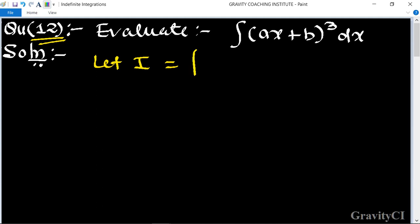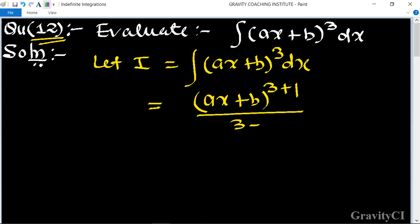= integration (ax + b)³ dx. After integration, we get (ax + b)^(3+1) upon (3+1), and the coefficient of x is a, so I